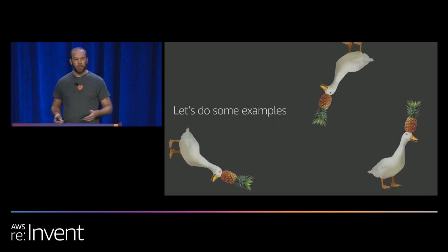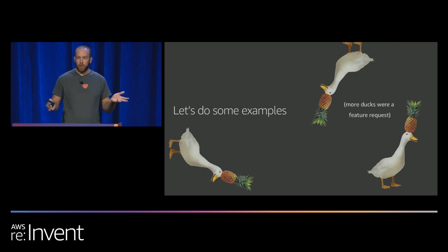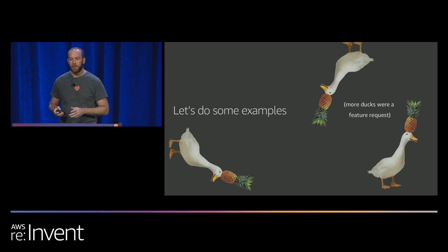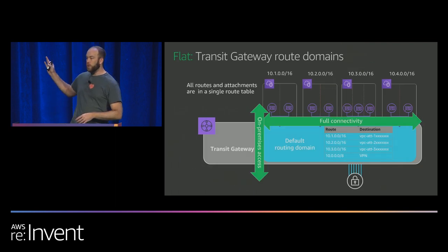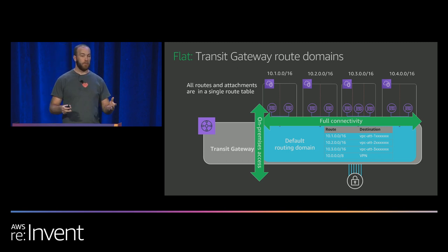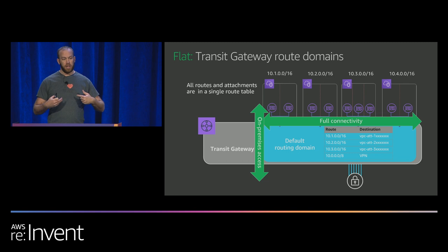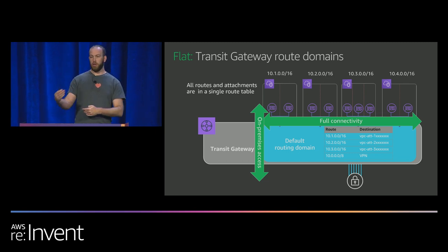Let's do some examples. The first model is flat — let everything talk to everything. It sounds overly permissive, but if you're using security groups, that might be how you're locking things down. This is the network team saying I'm allowing connectivity everywhere, security is up to you. Definitely a legitimate model.